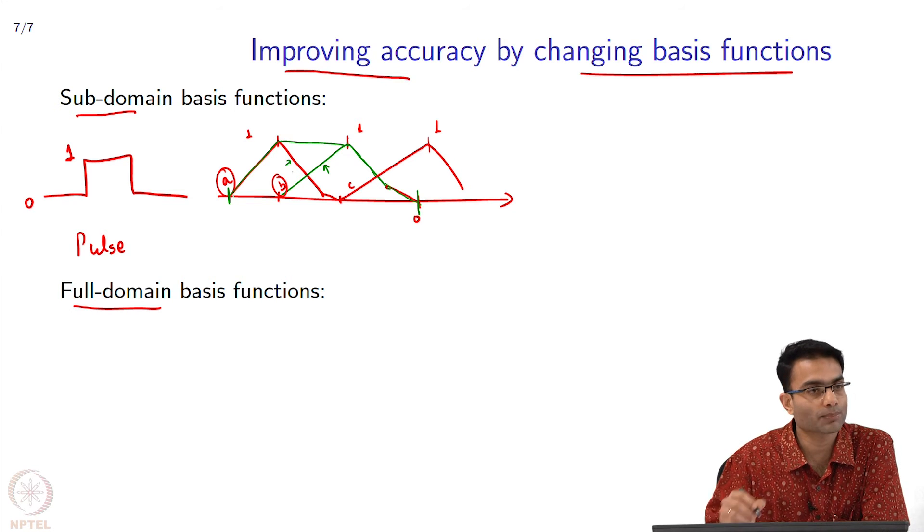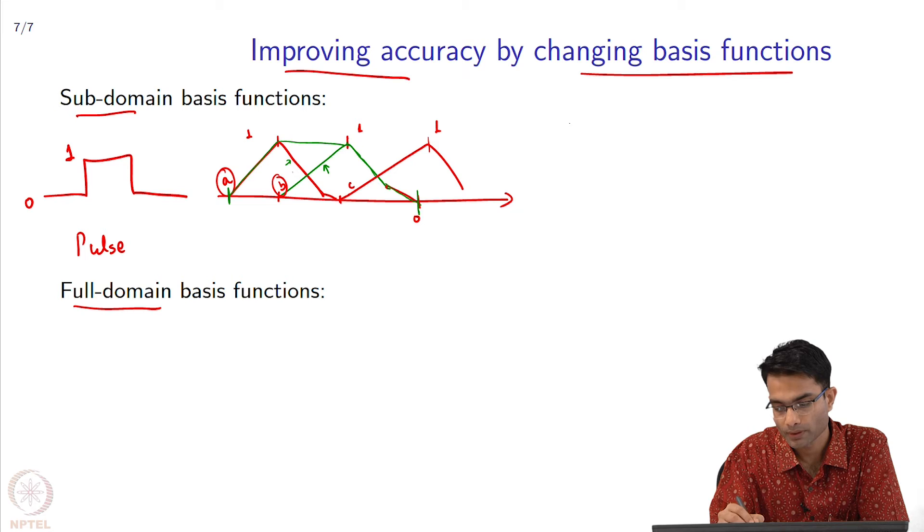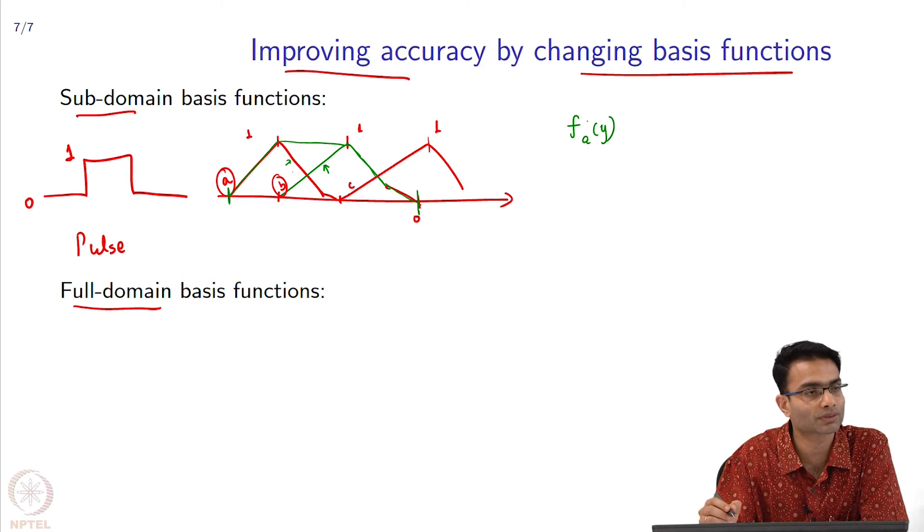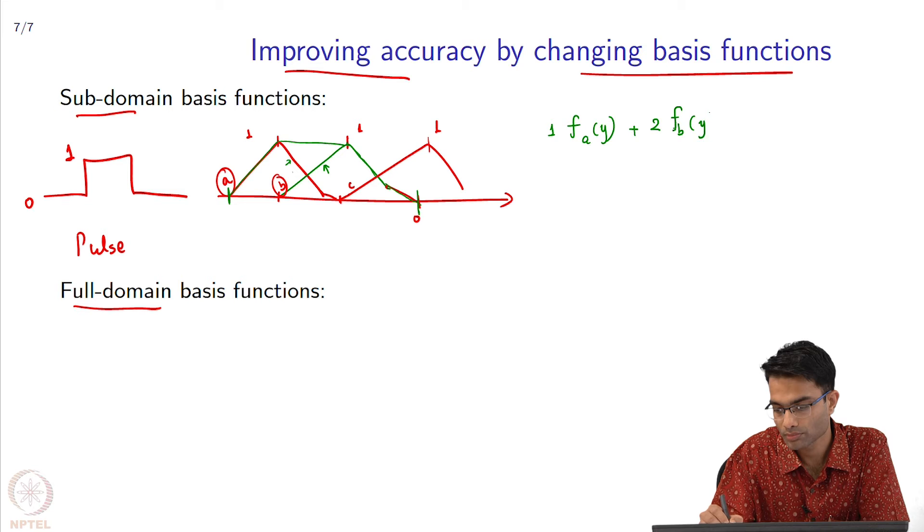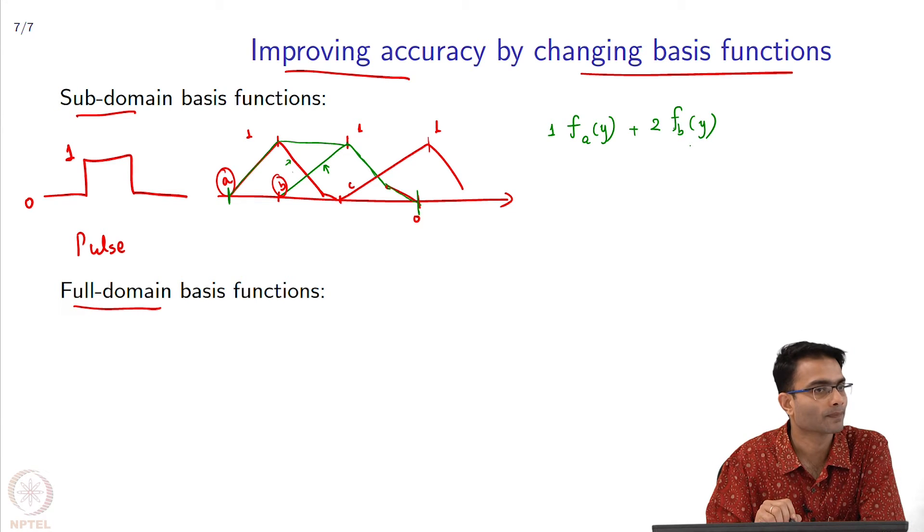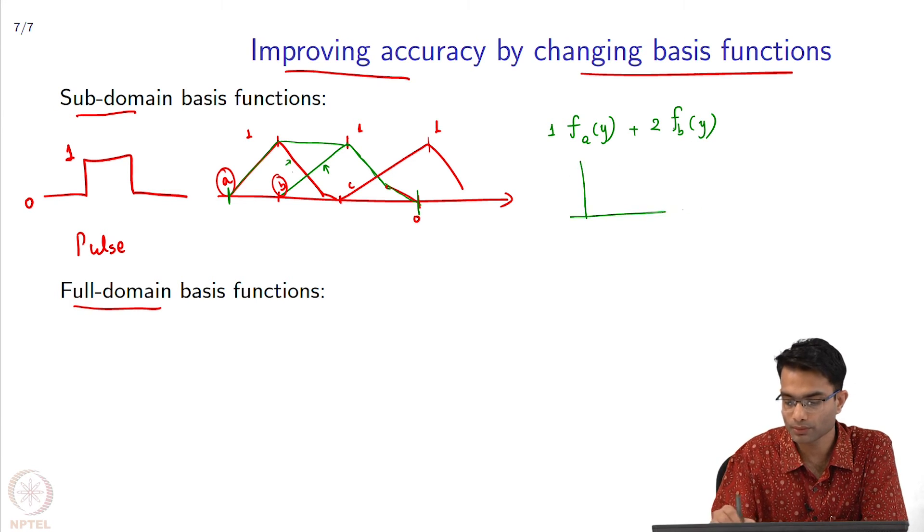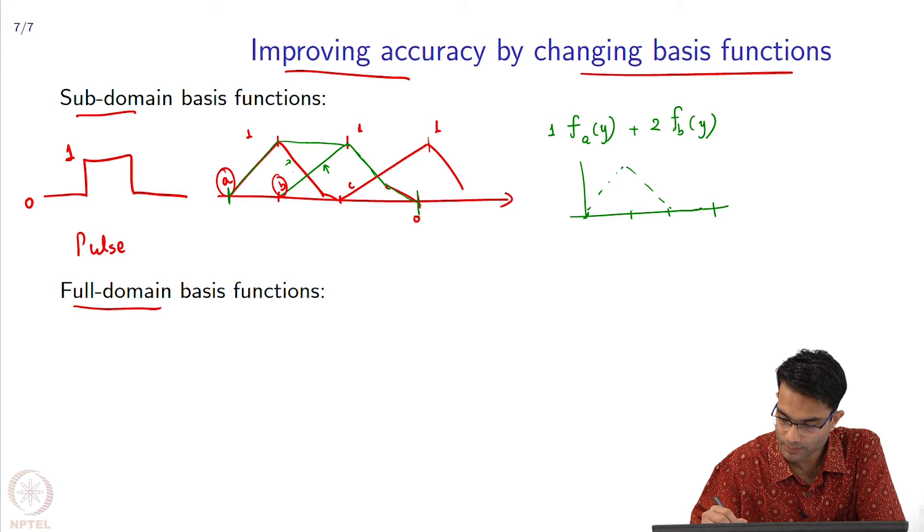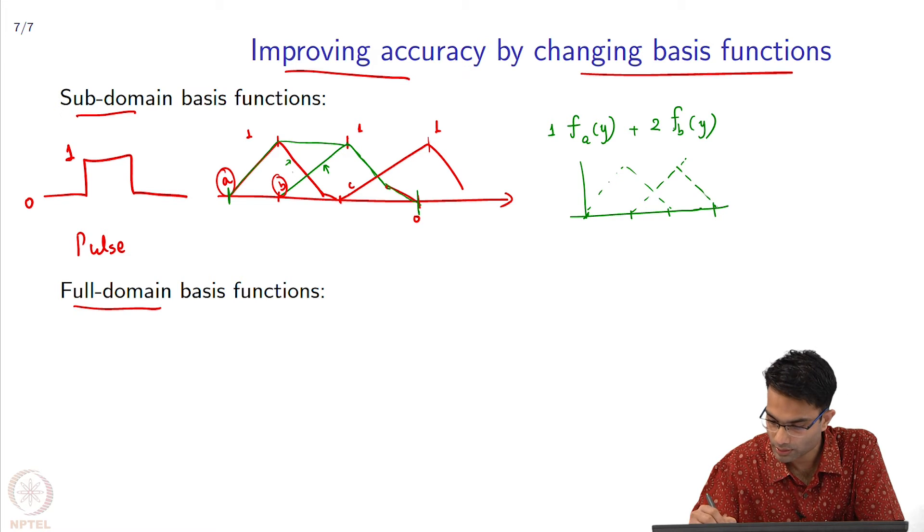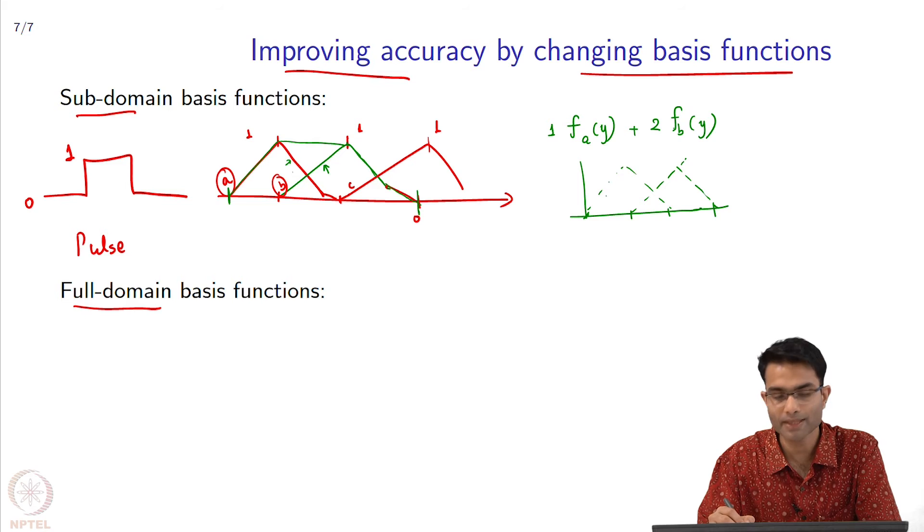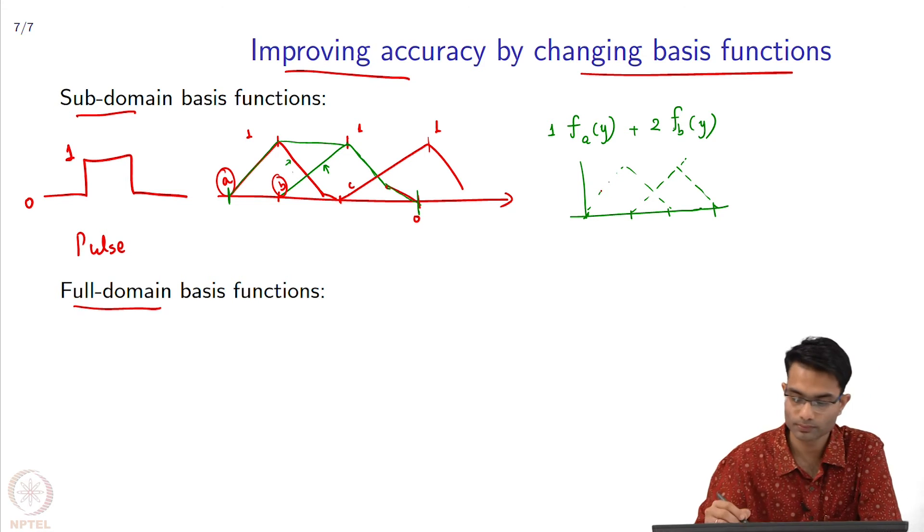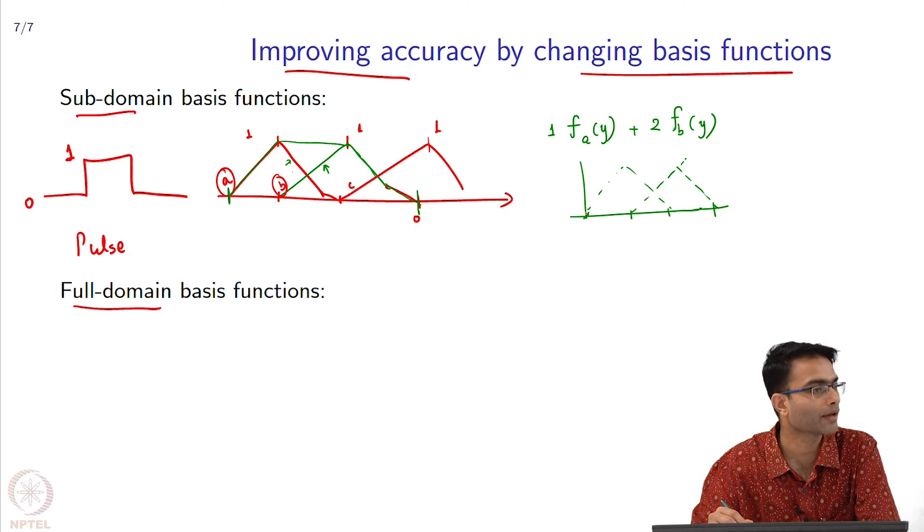I can extend this idea. Suppose now I do something like, you know, basis function A as a function of Y, and let's choose basis function B. What will happen? How will this guy look? Basis function A is like this, basis function B is like this. Now I am combining these two basis functions, but with a different height. What will it look like now?